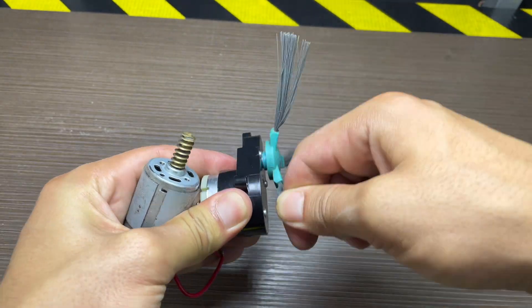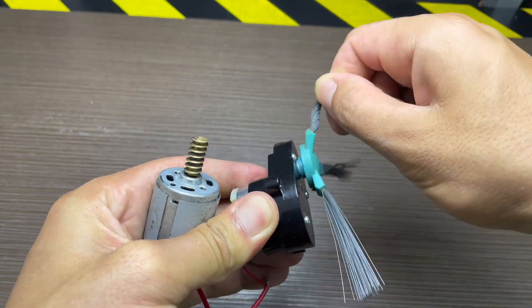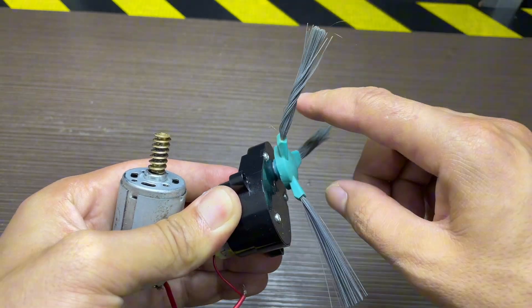As you can see, even though I'm rotating the motor slowly, it's still generating electricity quite efficiently. This proves that the idea works, even under simple conditions.